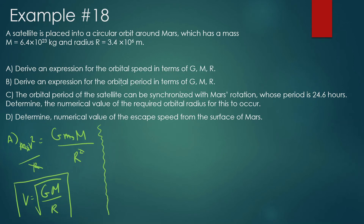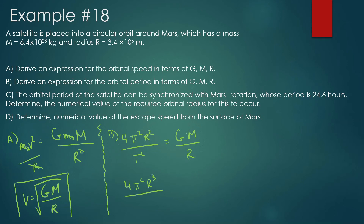Part B: derive an expression for the orbital period in terms of G, M, and R. I'm going to take v and change it to 2πR over T, then square it: 4π²R² over T² equals G·M over R. Isolating for T: 4π²R³ over G·M equals T squared. Taking the square root of everything, we get T equals the square root of 4π²R³ over G·M.